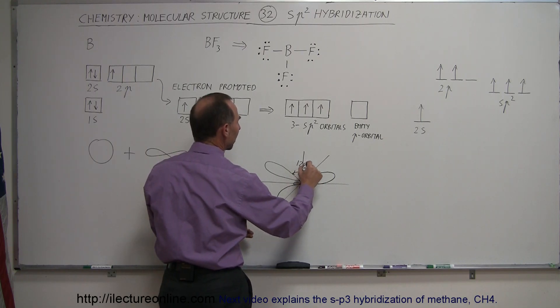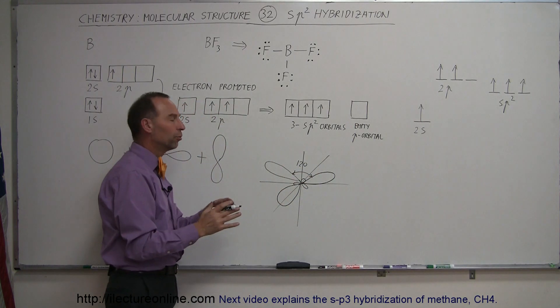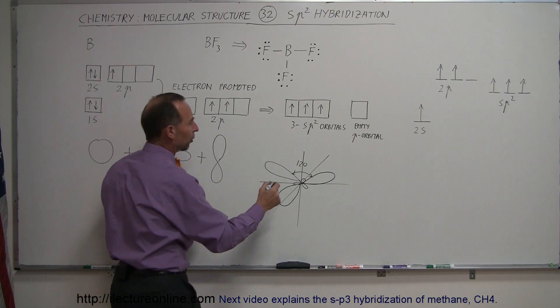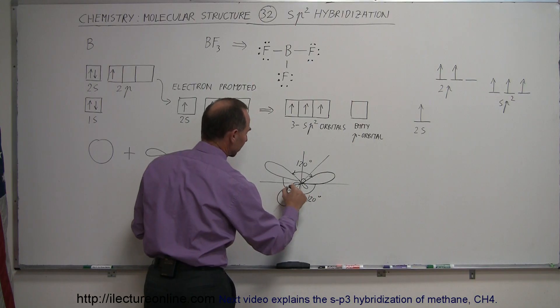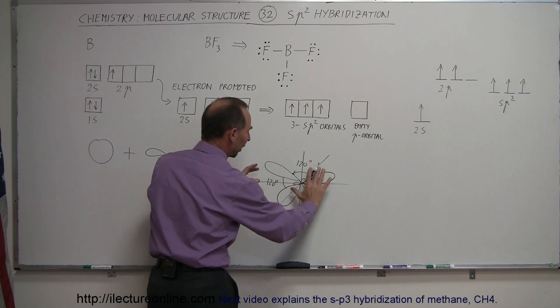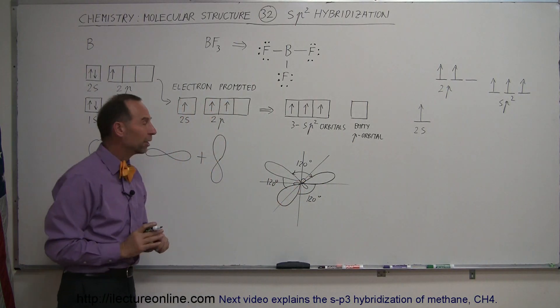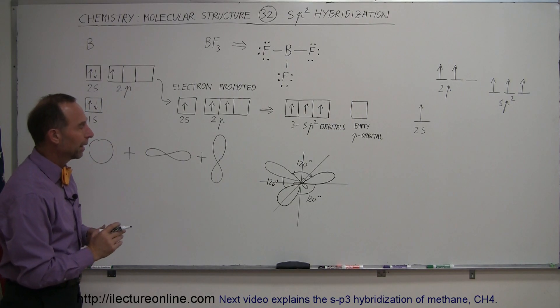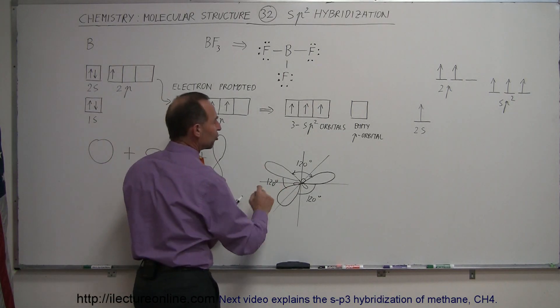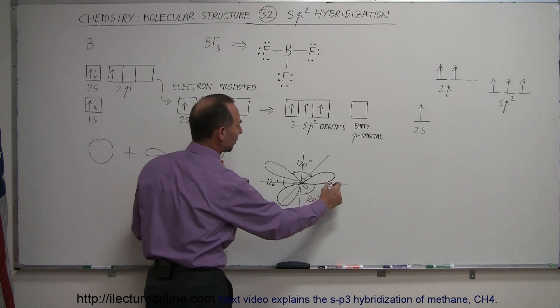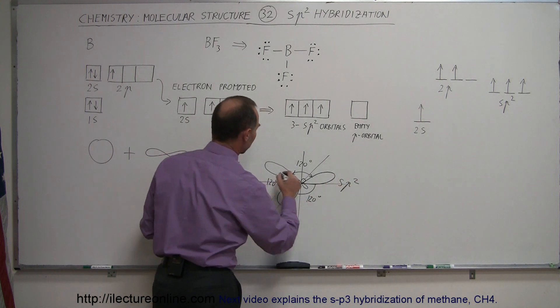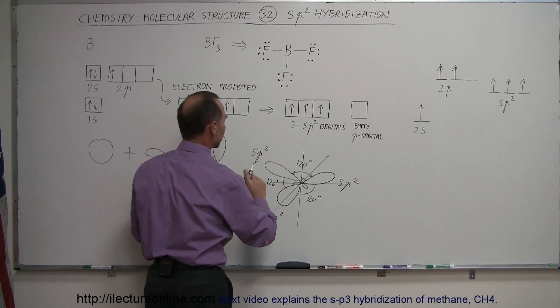Notice that all three of these electron lobes, or electron orbitals, are 120 degrees from each other, all in the same plane, 120 degrees like that. So that's where the trigonal planar shape comes from. And notice that they're all exactly the same in shape, and now they're called sp2 orbitals, and there's three of them. There's an sp2 orbital, there's an sp2 orbital, and there's an sp2 orbital.